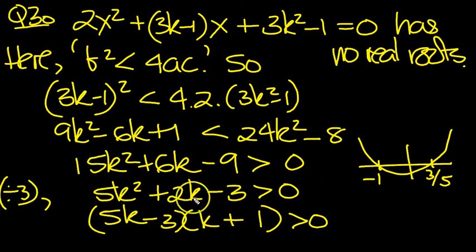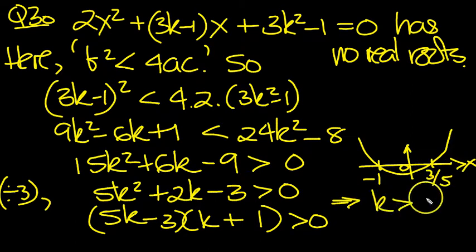So we need to ask ourselves, when is the quadratic greater than 0? When is it above the x-axis in other words? It's above the axis when k is greater than 3/5, because it has to be positive.